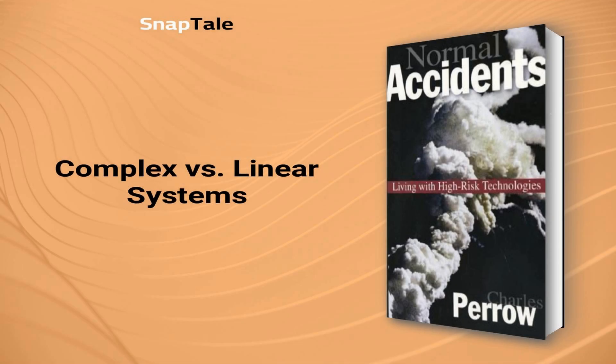Complex vs. Linear Systems. Complex interactions and tight coupling can lead to catastrophic failures. While complex systems have multiple interconnected components that may be hard to predict, they can be flexible enough to recover from component failures. Linear systems, on the other hand, are easy to predict, but a single component failure can trigger failure in other components, leading to catastrophe. The Grand Teton Dam collapse in 1976 is an example of how a tightly coupled linear system failed due to an insufficient solution to a known problem. Understanding the characteristics of different systems can help prevent disasters and improve functionality.